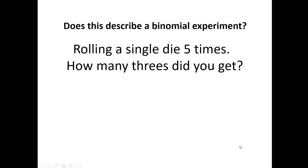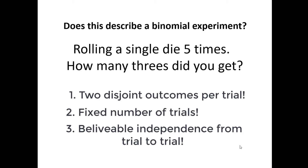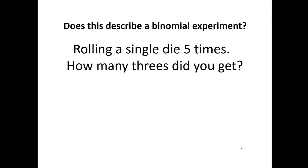Let's look at what happens if you roll a single die five times and keep track of how many threes you get over those five times. Does it match point one — only two outcomes? Yes, because you either get a three or you don't. Fixed number of trials? Yes, because I said roll it five times. Do the probabilities affect each other trial to trial? No — that's why Vegas uses dice, and why they're a nice thing to use in stats class too. Whenever you roll a single die, there's a one-in-six chance of getting a three and a five-in-six chance you won't. We can set this distribution up in the Excel calculator, which we'll look at as one of our examples.